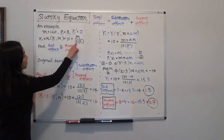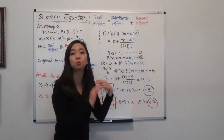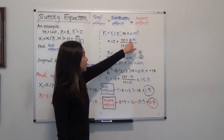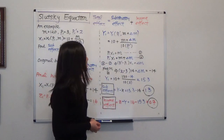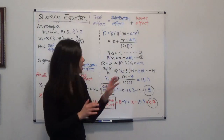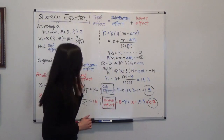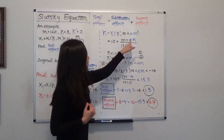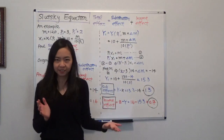We need to plug in our new price and our new income into the demand function: 10 plus our new income. The new income is M plus delta M — that is the money I give you or take away, depending on whether delta M is positive or negative — divided by 10 times P1'. The price P1' is $2, and the original income is $120. So my goal is to find delta M, and once I find delta M, I can find Y.